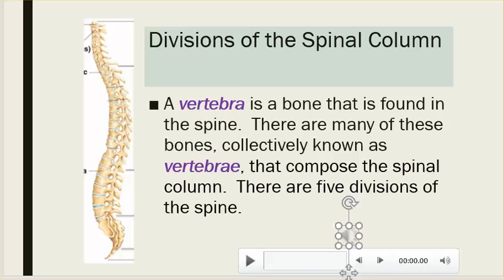A vertebra is a bone that is found in the spine. There are many of these bones, collectively known as vertebrae, that compose the spinal column. There are five divisions of the spine.